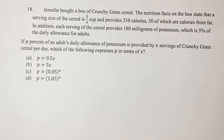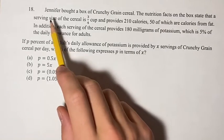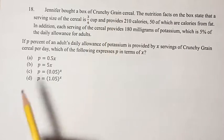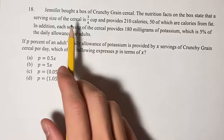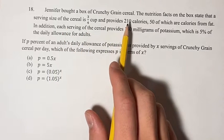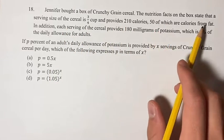Hello and welcome back to another video. In this problem we're told that Jennifer bought a box of crunchy grain cereal. The nutrition facts on the box state that the serving size of the cereal is three-quarters of a cup, provides 210 calories, 50 of which are calories from fat.